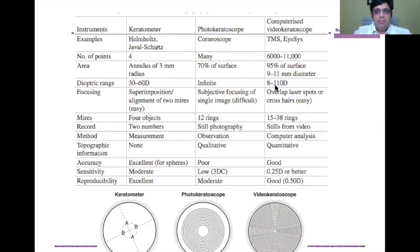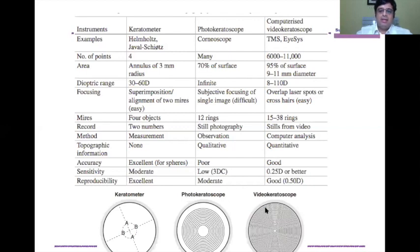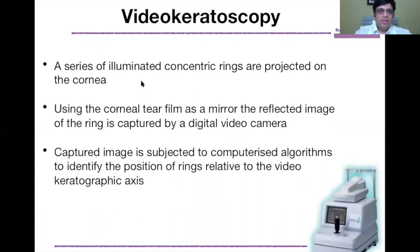The video keratoscope has improved diopter range coverage up to 110 diopters, with up to 38 rings, accuracy of ±0.25 diopters, and good reproducibility. Video keratoscopy uses a series of illuminated concentric rings projected on the cornea. It uses the corneal tear film as a mirror, and the reflected ring image is captured by a digital video camera. The captured image is subjected to computerized algorithms to identify the position of rings relative to the video keratographic axis, giving angulation, then radius of curvature, and finally the diopter K value.